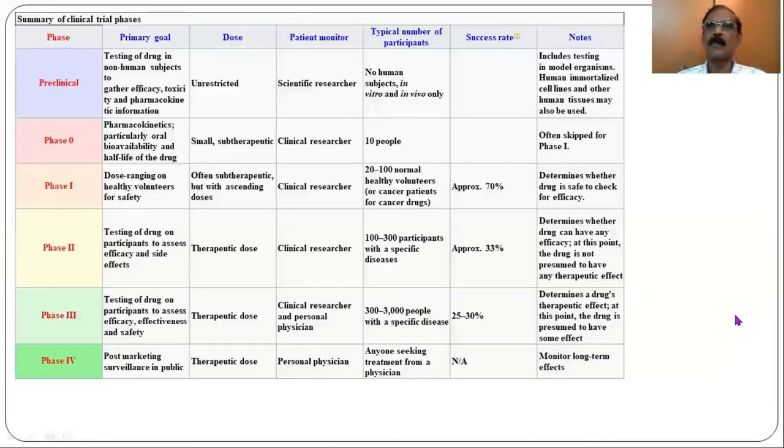Phase 1, Phase 2, Phase 3. Phase 3 is around 300 to 3000 people with a specific disease. If it is succeeded, then Phase 4 is come to the market.